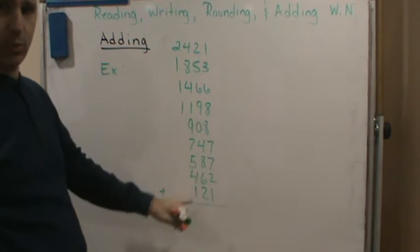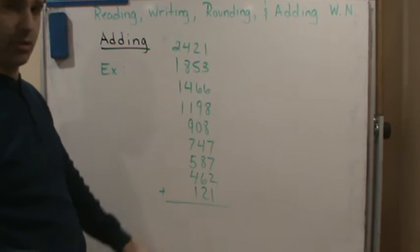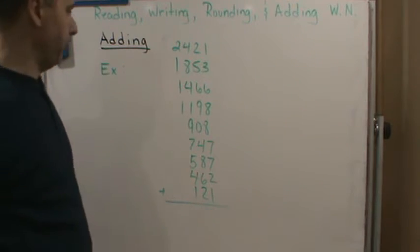In this case we're going to round to the nearest hundred. When we're dealing with large numbers like this, just round to the nearest hundred and see what we come up with.